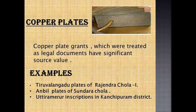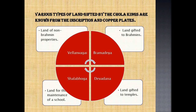Next, copper plates. Copper plate grants, which were treated as legal documents, have significant source value. Islamic practices and the relatively high cost of copper plates made palm leaf and paper cheaper alternatives from the 13th century onwards. Several copper plate grants issued during the later Chola period record gifts to individual priests or teachers who were Hindus, Buddhists or Jains, or to persons of eminence. Both the giver and the receiver are very elaborately described in the copper plates.